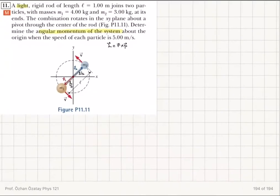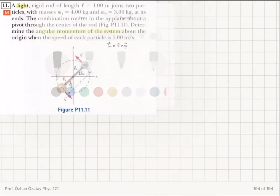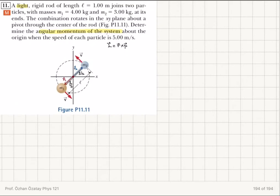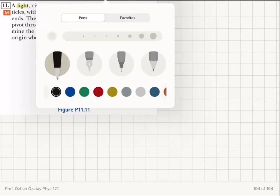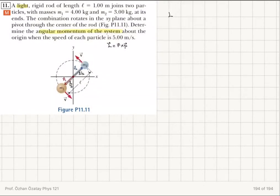I notice that these particles are at the two ends and I'm taking the angular momentum with respect to the center. So I can see that this has a magnitude l over two and this has a magnitude l over two. Now I'm ready to calculate the angular momentum.